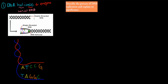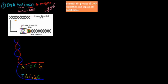DNA itself is a double-stranded molecule and it has that helical structure. What DNA helicase does, as you can see here, is it actually unwinds the helical structure — making it go from a helical structure into a single-strand structure. It will go and unwind that whole helical structure — that's why it's called DNA helicase.